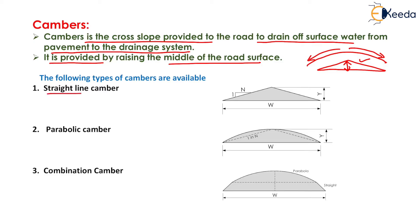We generally have three types of camber: straight line camber, parabolic camber, and combination camber. For straight line camber, the height is indicated by Y, the slope is generally 1 in N, and the overall width is W. The value of Y equals W divided by 2N.